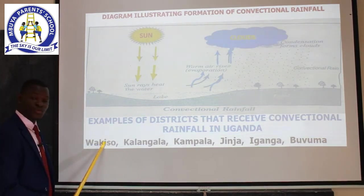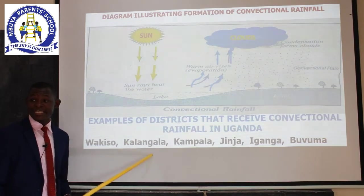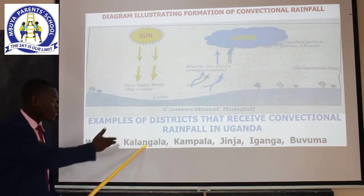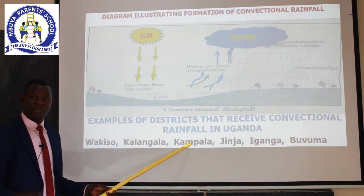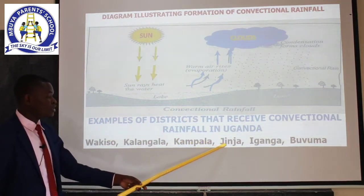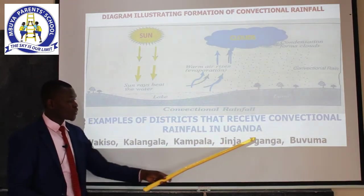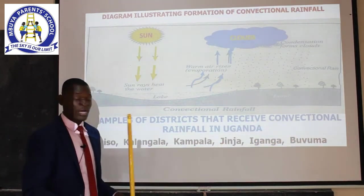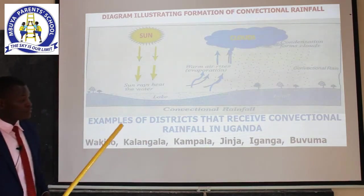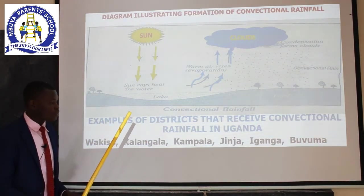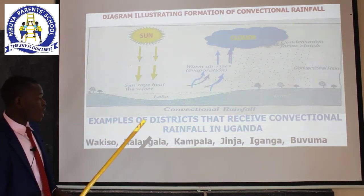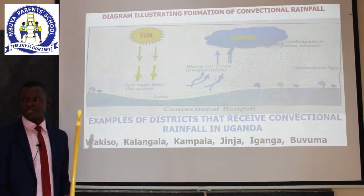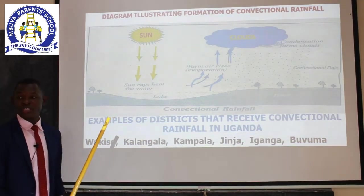Districts where convectional rainfall is received include Wakiso district, Kalangala — which is an island district surrounded by water — Kampala, because it is near Lake Victoria, Jinja, still on the shores of Lake Victoria, Iganga, and Buvuma, one of the island districts in Uganda.